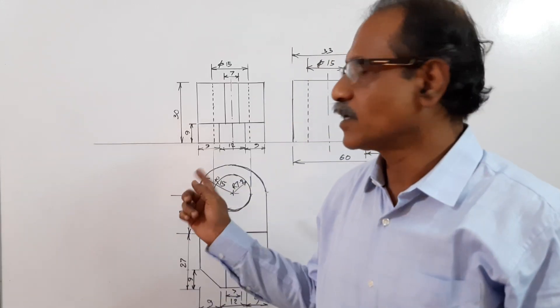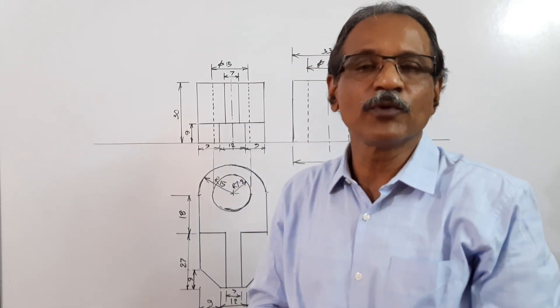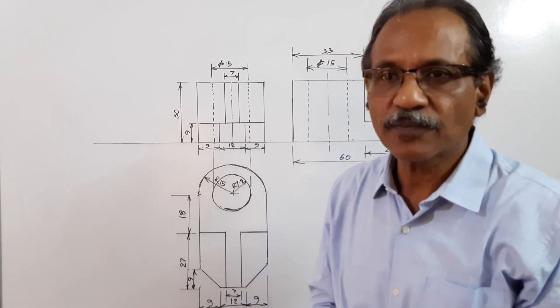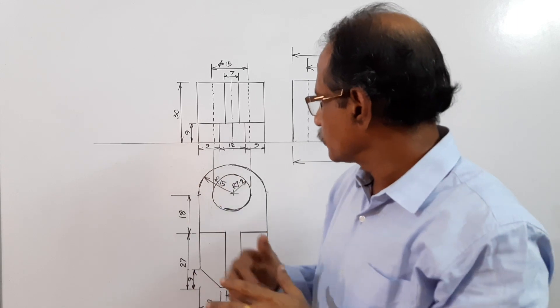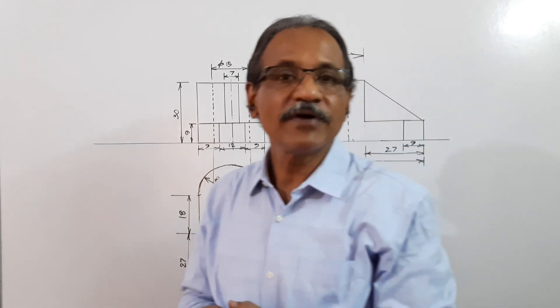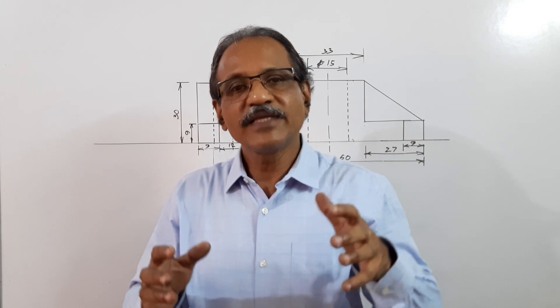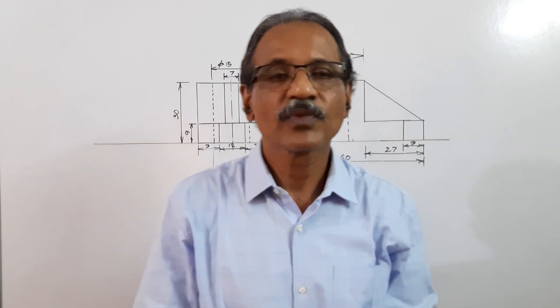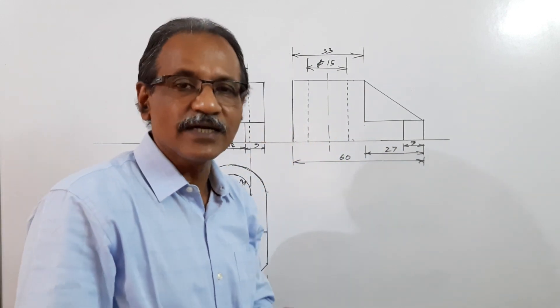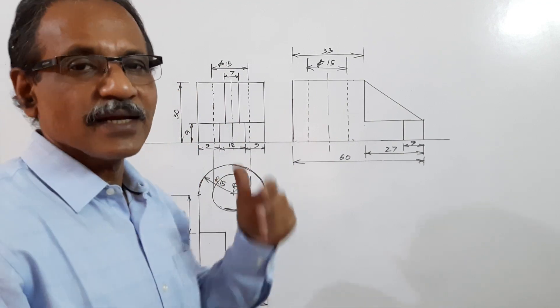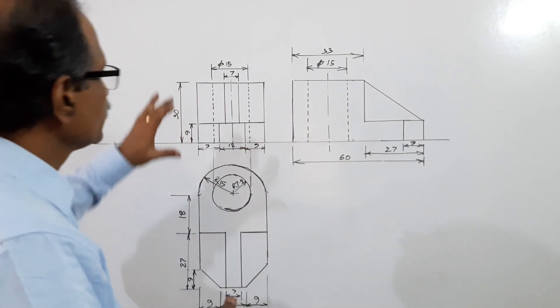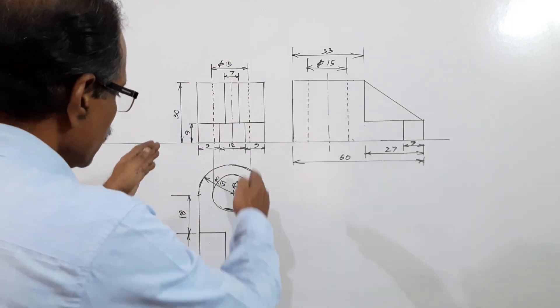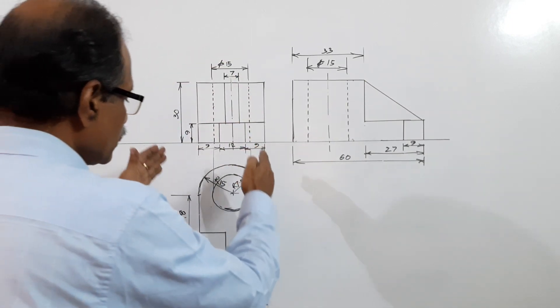We are coming to the last problem in the fifth module of the question paper. It's a block given in the question with the help of an isometric view. Isometric view of a block is given. You are asked to draw the plan, elevation, and one side view. This is the elevation. The direction of the elevation is given. This is the plan.